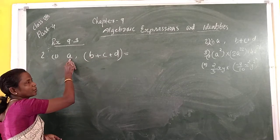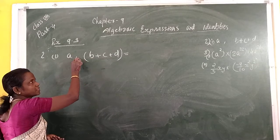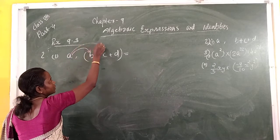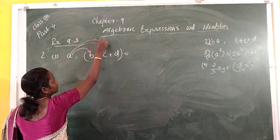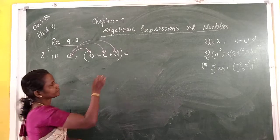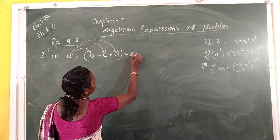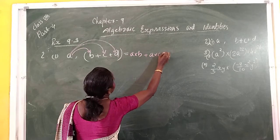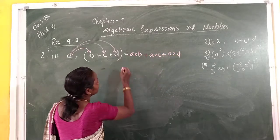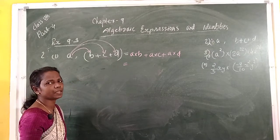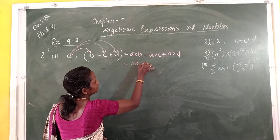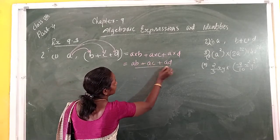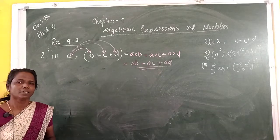This monomial multiplied by the trinomial means we multiply A by each term: A multiplied by B, then A multiplied by C, then A multiplied by D. So we write A×B plus A×C plus A×D. The answer is AB plus AC plus AD.